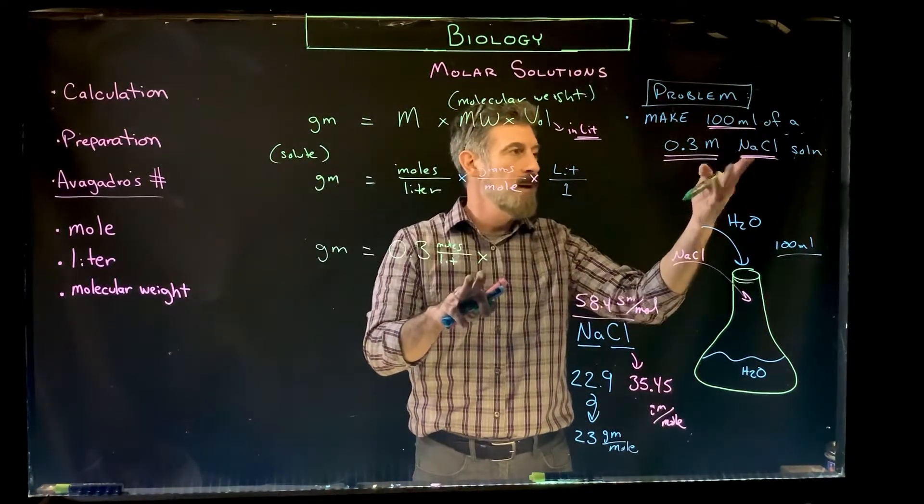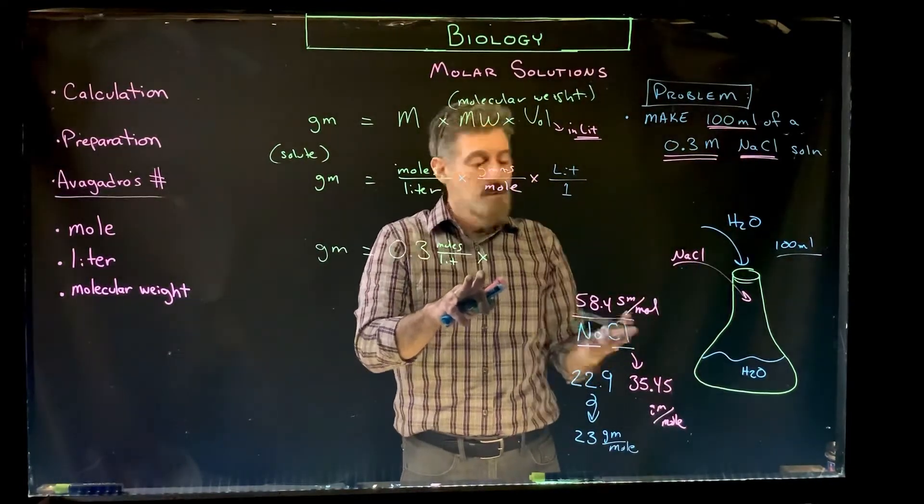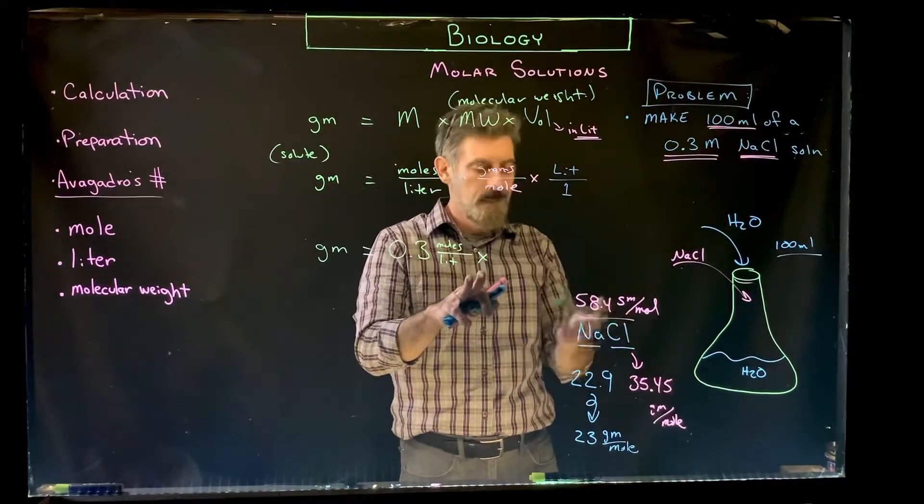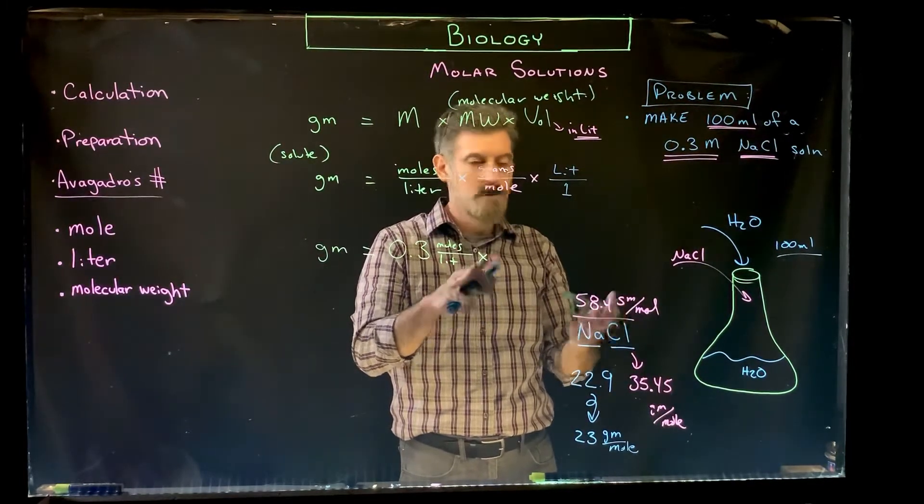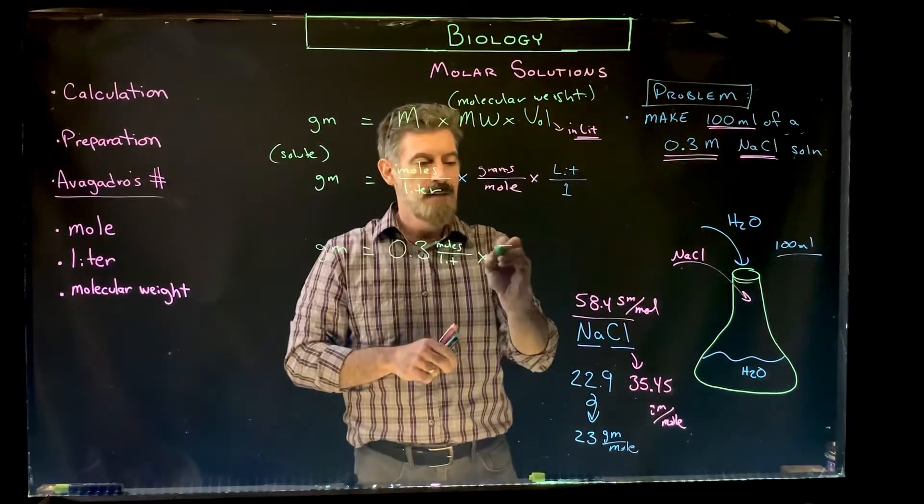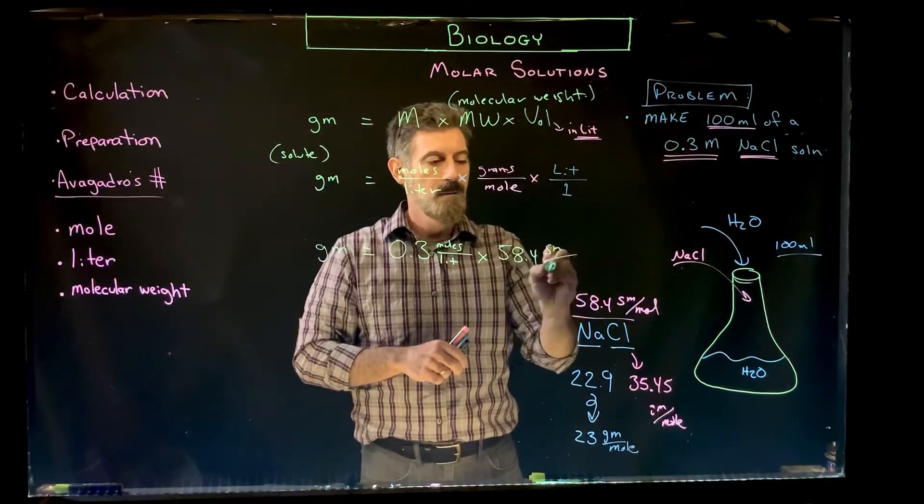What's the molecular weight of sodium chloride? It didn't tell us, but it's something we could look up or we could figure out on our own just with a periodic table. Sodium, chlorine, add up the atomic masses, you get the molecular mass or molecular weight. So we put that in there, 58.4 grams per mole.